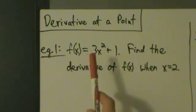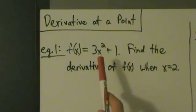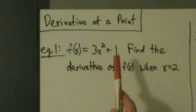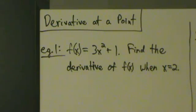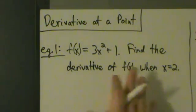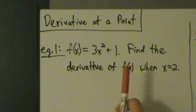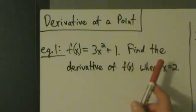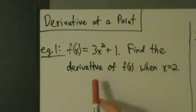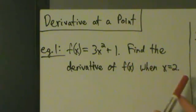Example 1: f of x equals 3x squared plus 1. Find the derivative of f of x when x equals 2. This is just a straightforward example — find the derivative of f of x when x equals 2.